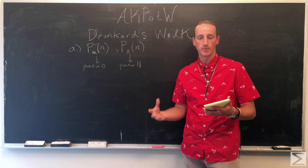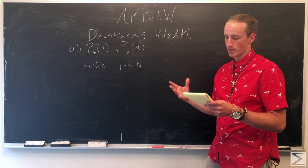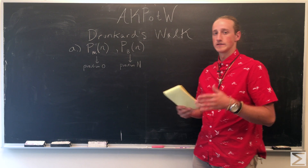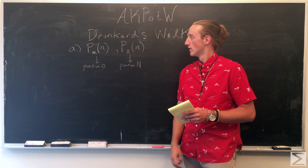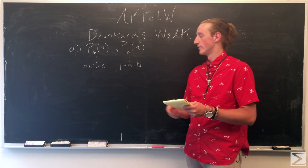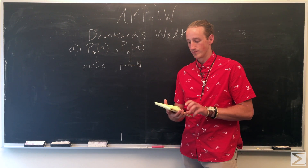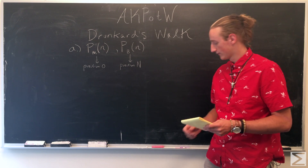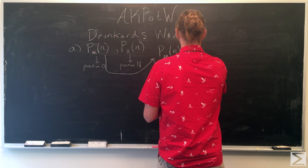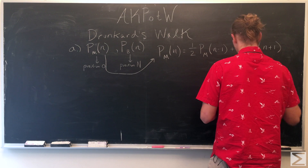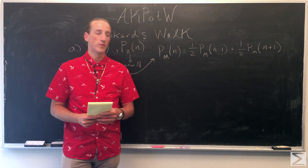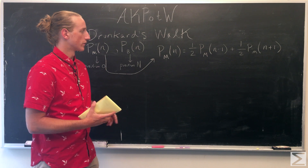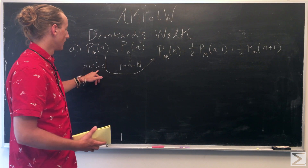After taking one step, depending on where he is — n is the current position — it's a 50-50 chance of going either way. At n minus 1 he'll be one step left, and at n plus 1 he'll be one step closer toward the bar. So at any point, the probability Pm of n is going to be the sum of those two probabilities, meaning Pm of n is a linear function of n.